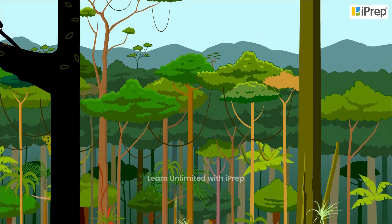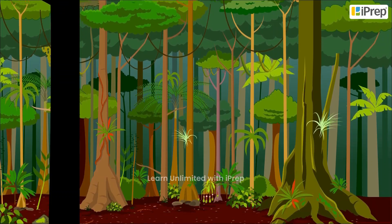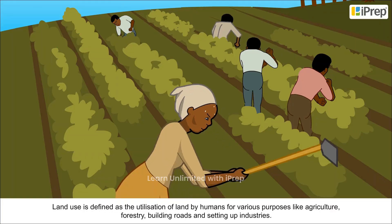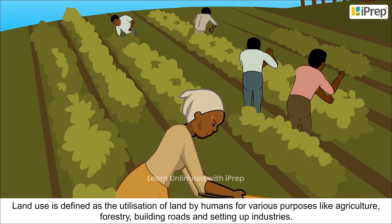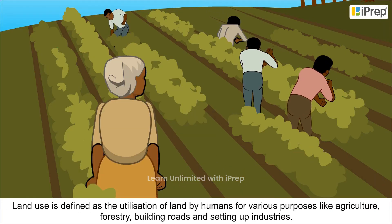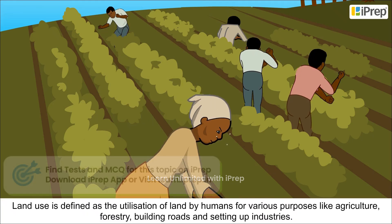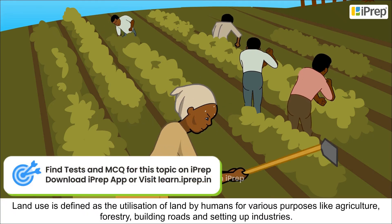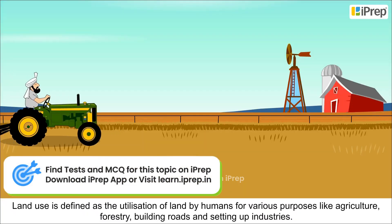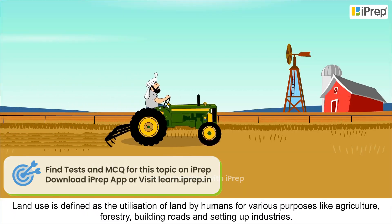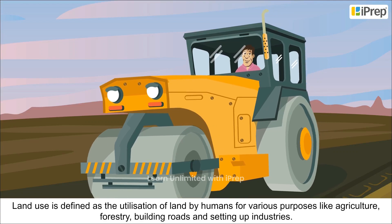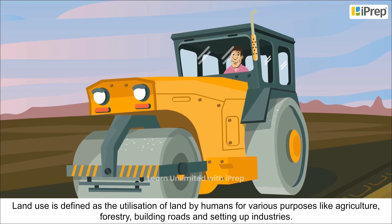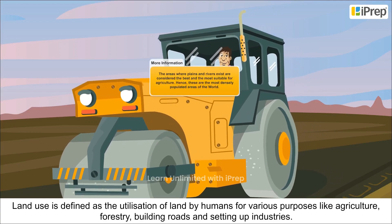Land use is defined as the utilization of land by humans for various purposes like agriculture, forestry, building roads, and setting up industries.